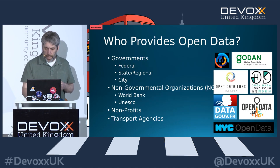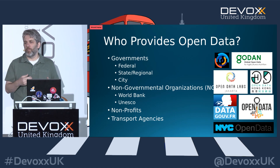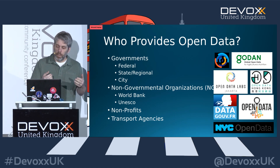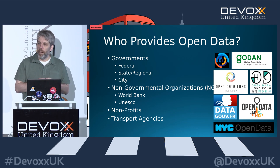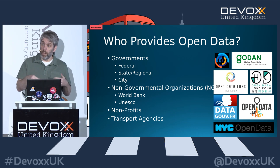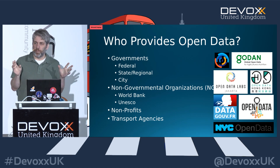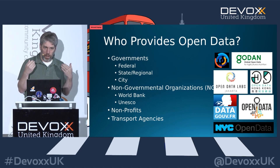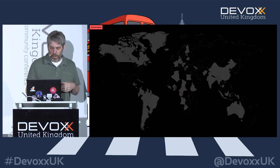A lot of countries are doing this — federal governments, state and regional governments, city governments, NGOs, non-profits. A lot of people provide open data. One of the first real examples that I'm aware of was Transport for London right here in London. They made their data open very early and provided some APIs. CityMapper, I think, was one of the first ones to use it. Just the tip of the iceberg — transport agencies are a real obvious open data initiative, but there are many other things out there.